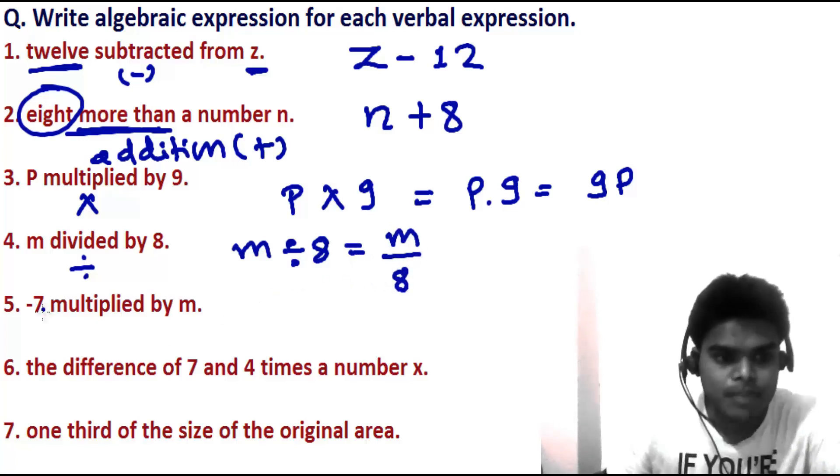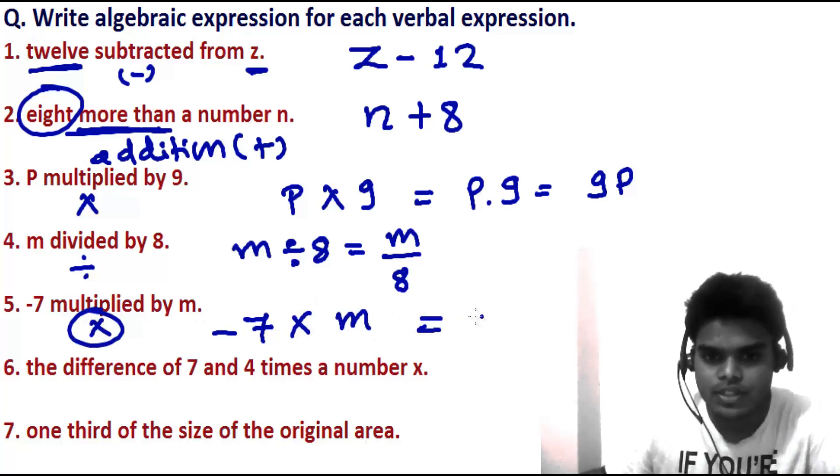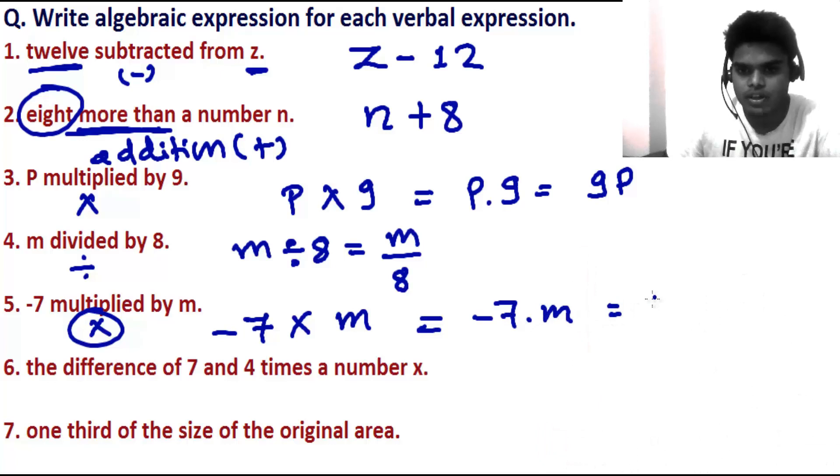Minus 7 multiplied by M. So we have a number here, M, and multiplied means multiplication. Multiplied by M, which further you can write as minus 7 dot M, or you can write as minus 7M.